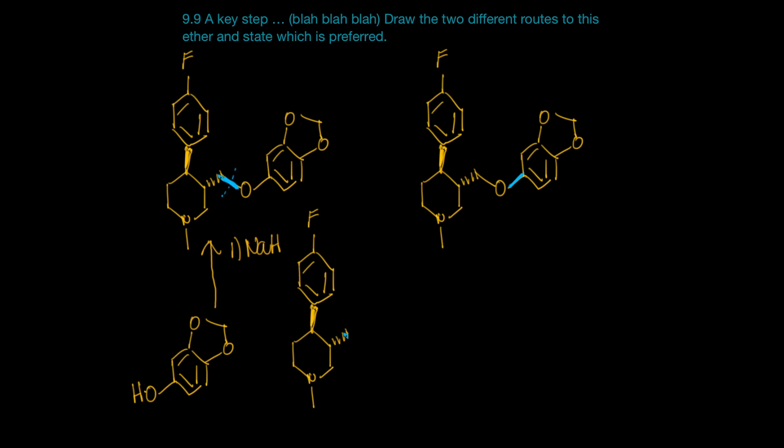Now what's a good leaving group? I would say the best leaving group would be iodine. So let's take this carbon which is needed and place an iodine atom here. That would be the good leaving group.